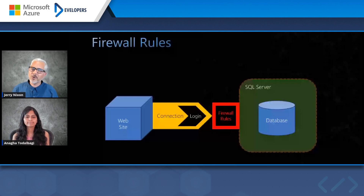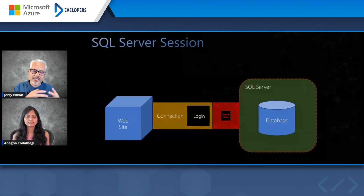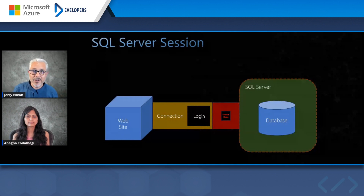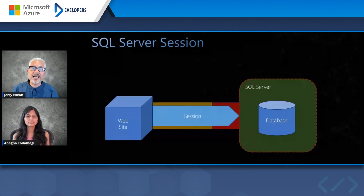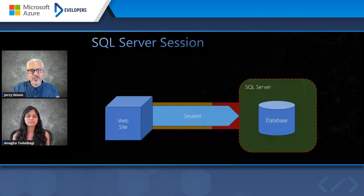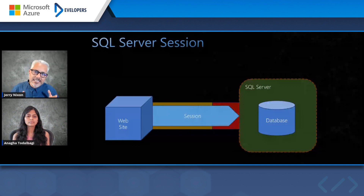Let's pretend we've set our firewall rule the way we want to. We know our login and password and everything is good. Now we have this kind of tunnel into SQL Server and our connection is made. This makes it worth talking about what a session is — a session is inside the connection. Once you have the physical connection made, you're establishing your TCP/IP, your encryption, all of that. Now you have a session into SQL Server itself where you can do work.